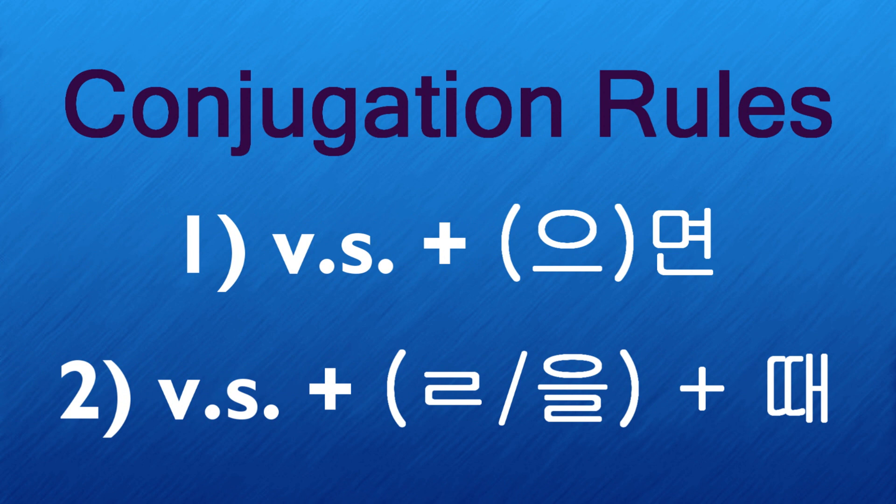To make the 면 form, take the verb stem and add 면 if it ends in a vowel, or 으면 if it ends in a consonant. For the 때 form, take the verb stem and add 릴 if it ends in a vowel, or 을 if it ends in a consonant, then add 때.